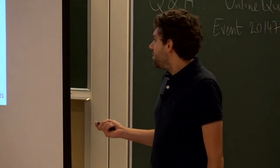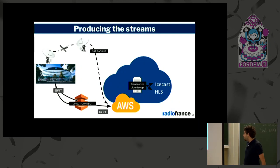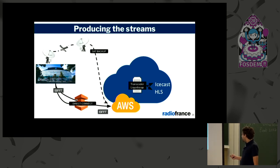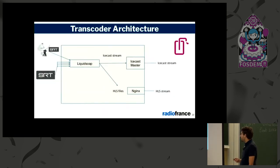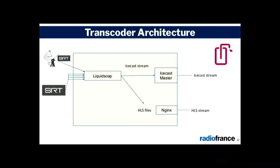We put LiquidSoap on a server we call a Transcoder. We put two Transcoders in the cloud. Inside a Transcoder there is LiquidSoap receiving the five inputs, instances of IceCast server we call IceCast master (because it has the master stream we relay afterward), and it creates HLS files. Since HLS is just files, we can use a web server like Nginx to serve the static content.